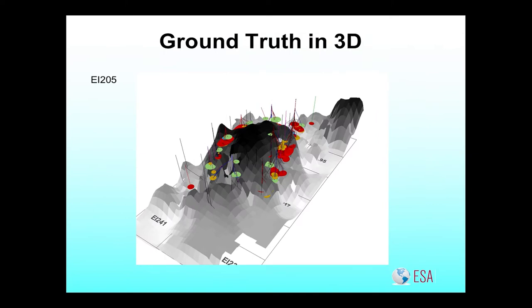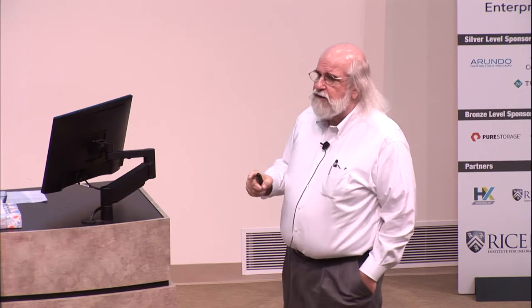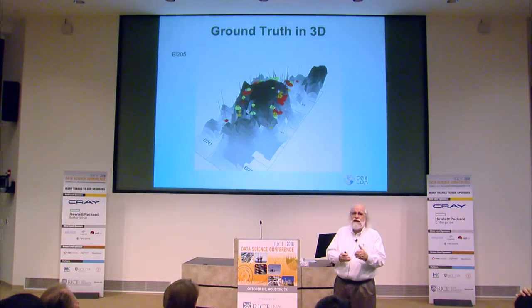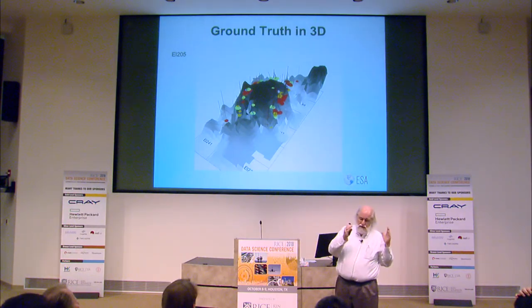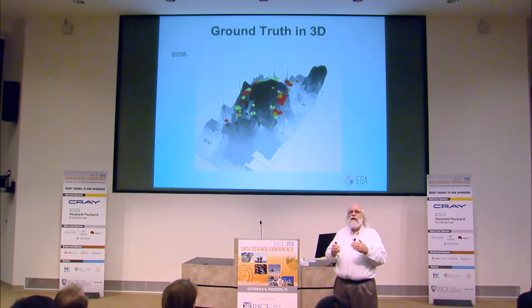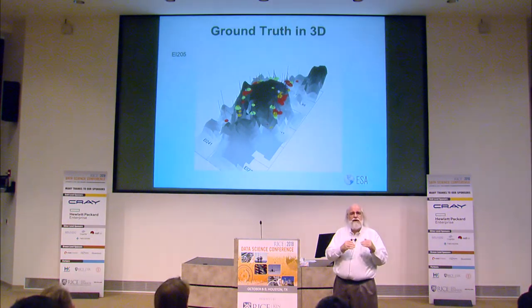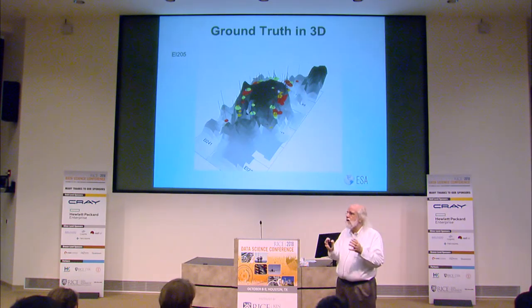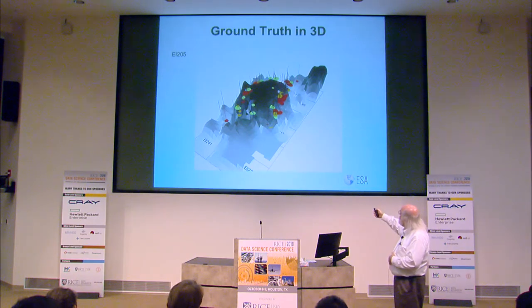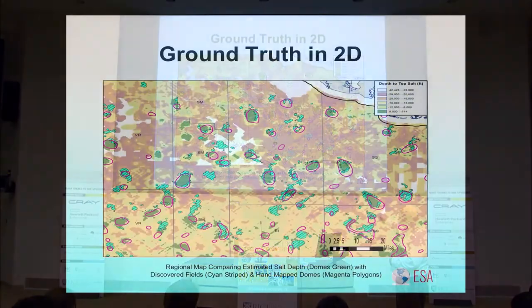This is what we come out with: an estimated surface of the top of the salt from these 8,000 cross-sections shot in seismic between 25 and 35 years ago. We got the lines out of them and then estimated the surface in three dimensions, given that fairly dense matrix of seismic lines in two dimensions. You can also see a halo-like structure of reservoirs surrounding it.